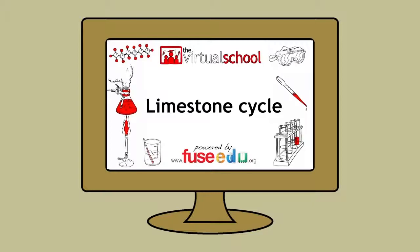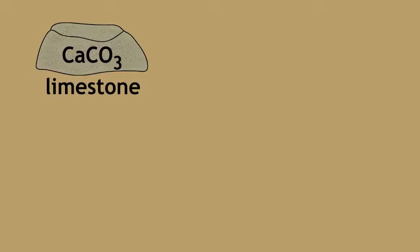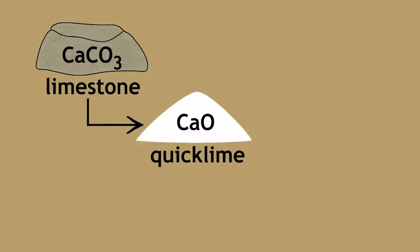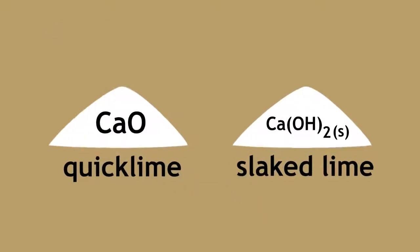We have previously learned about how limestone is formed and the limestone cycle. We will now learn about the uses of limestone and its many real-life applications. Limestone is the starting material in the production of quicklime, which is calcium oxide, and slaked lime, which is calcium hydroxide, as seen in our previous lesson. There are many more uses to limestone than simply producing quicklime and slaked lime.